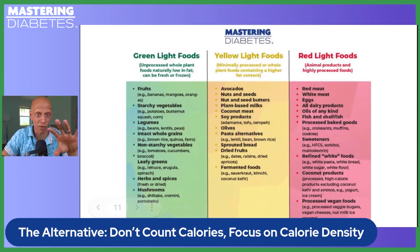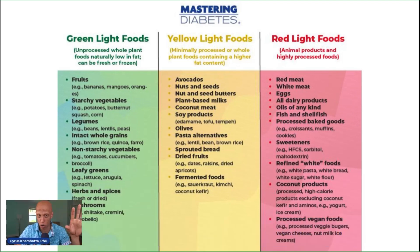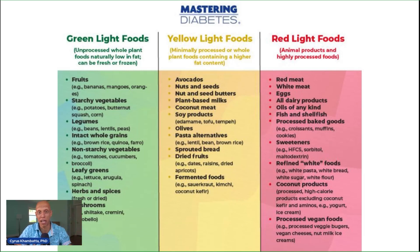Green light foods include fruits of all shapes, colors, and sizes; starchy vegetables like potatoes and butternut squash — and I'll put corn in this category even though it's technically a grain; legumes like beans, lentils, and peas; intact whole grains that are minimally processed, like brown rice, quinoa, and farro; non-starchy vegetables like tomatoes, cucumbers, broccoli, and cauliflower; leafy greens like lettuce, arugula, and spinach; herbs and spices whether fresh, dried, or bottled; and mushrooms of all shapes and sizes, including shiitake, crimini, portobello, and other Asian varieties.